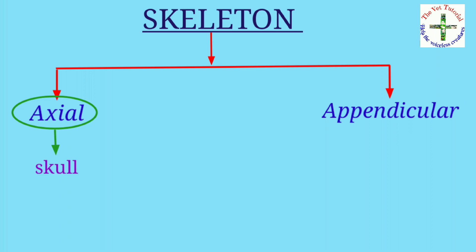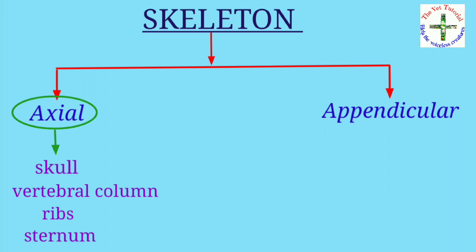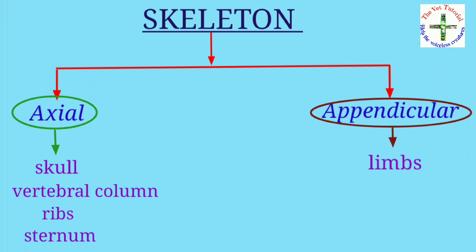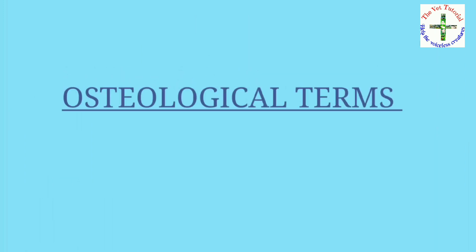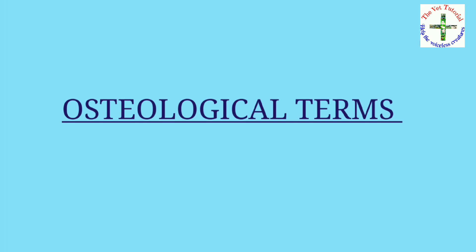The skeleton is divided into two parts: axial and appendicular. The axial skeleton comprises the bones of the skull, vertebral column, ribs, and sternum. The appendicular skeleton is made up of bones of the limbs. Now let's start with the osteological terms. First is process — it is any projection or prominence of the bone.